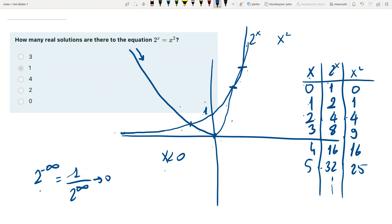So there are two more intersection points. Hence, we have in total three solutions to the equation.